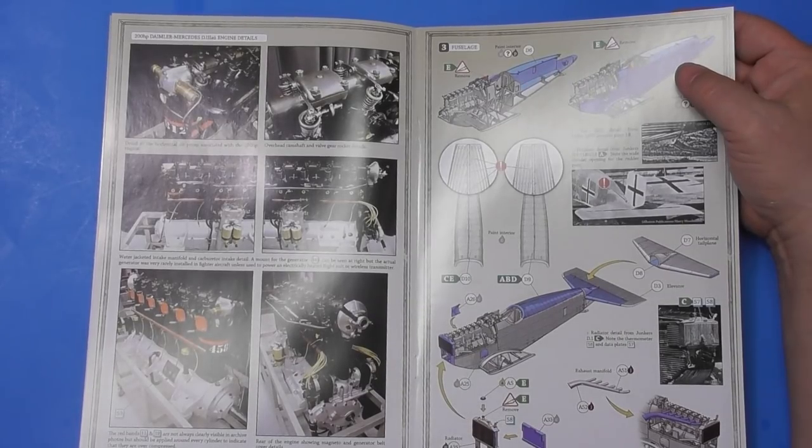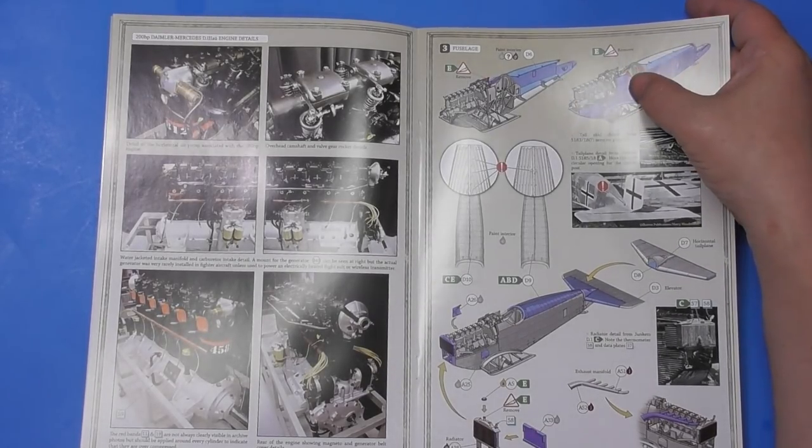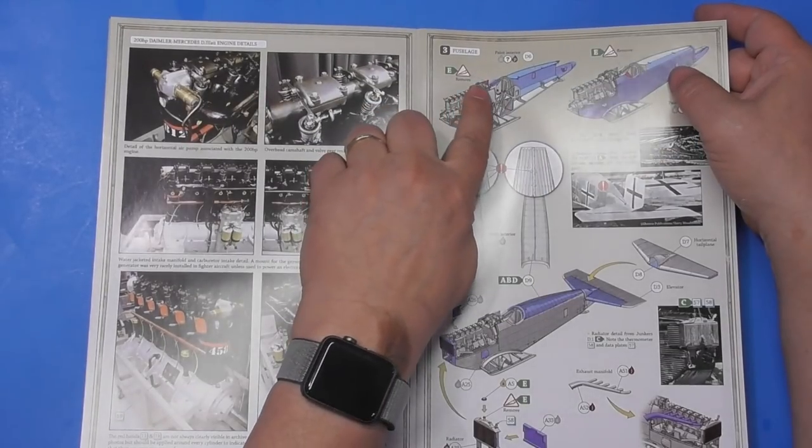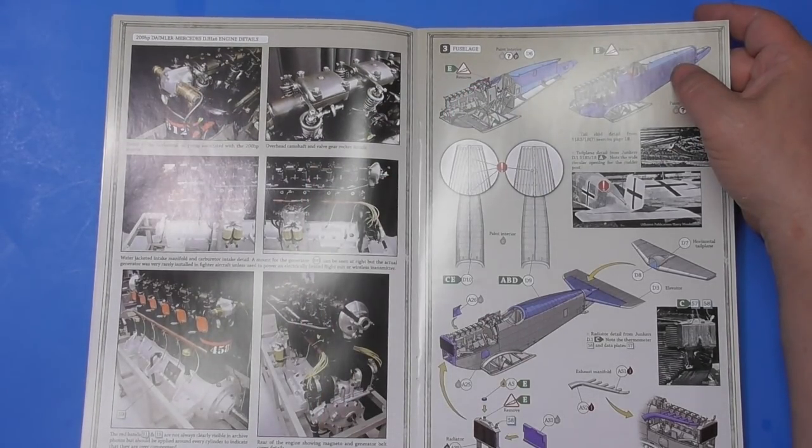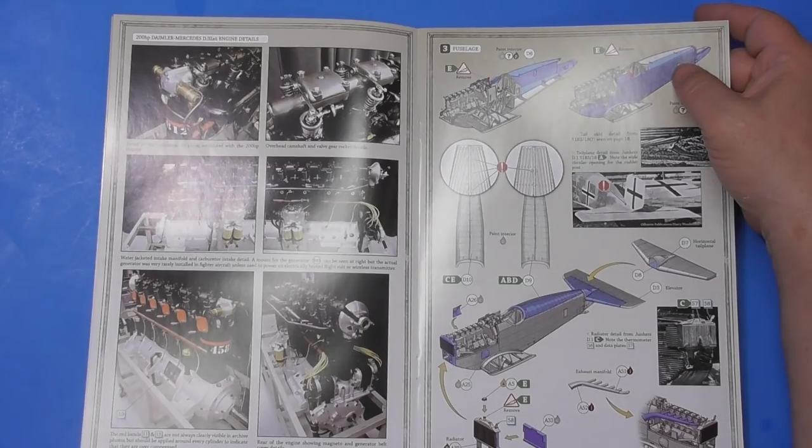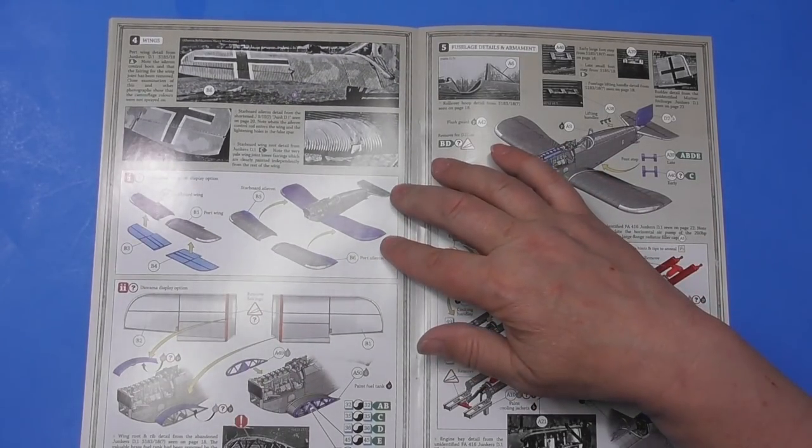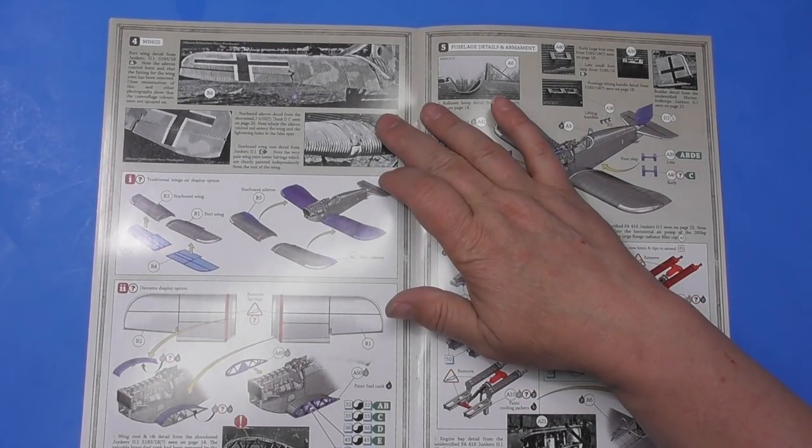Putting the engine in, the cockpit in, putting the fuselage halves together. Some parts you need to remove depending on the version you're doing. Doing version E, remove that part. I like these directions. Very colorful, bits of information.